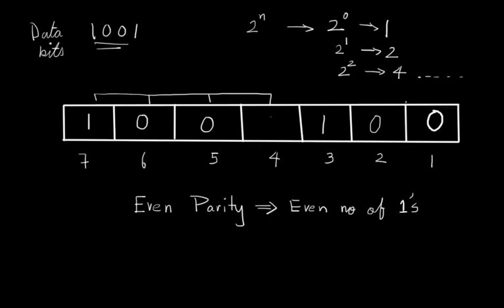So in this three bits there is only one 1. So in the fourth parity bit we would have 1.